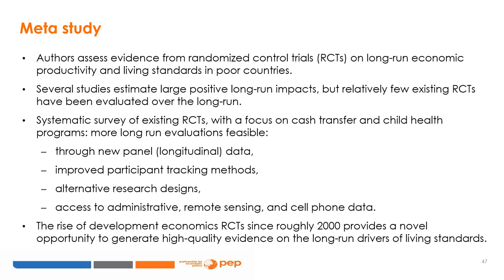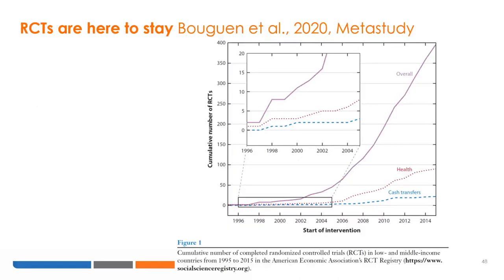They did a systematic survey of existing randomized control trials focusing on cash transfer and child health programs like those in this module, and posit that more long-run evaluations are feasible through new panel longitudinal data with improved participant tracking — such as what we saw in the Kenya and Bangladesh papers. These papers followed individuals over longer periods through alternative research designs, for instance looking at census data as in the Honduras paper and by means of access to administrative and cell phone data. This figure shows how RCTs in low- and middle-income countries grew from fewer than 50 in 2004 to about 400 in 2015.